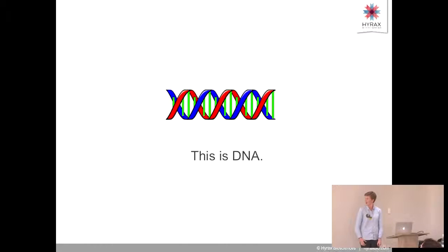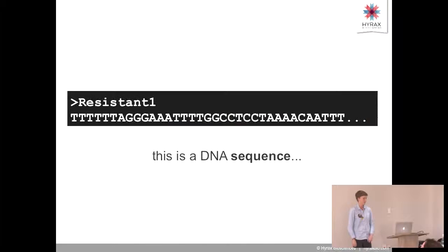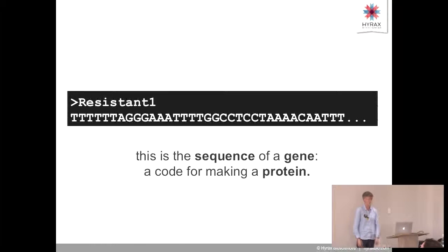So let's start with a bang. That's DNA. It's a double helix, a chain of molecules wrapped into a double helix, but it's pretty useless in that form. In order to do anything useful with it, we need to sequence it. That's what it looks like after you've sequenced it. That's a DNA sequence in a format called FASTA. It has a name and then a string of letters: A, C, G, T. This particular sequence is the sequence of a gene, a code for making a protein.